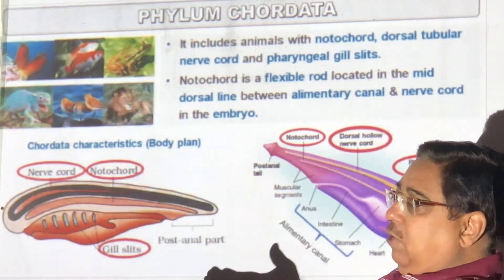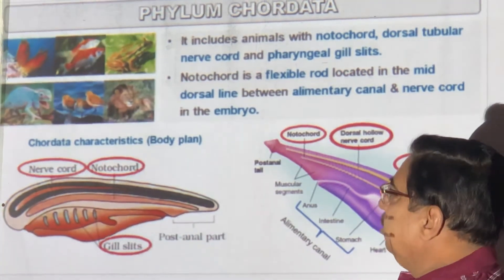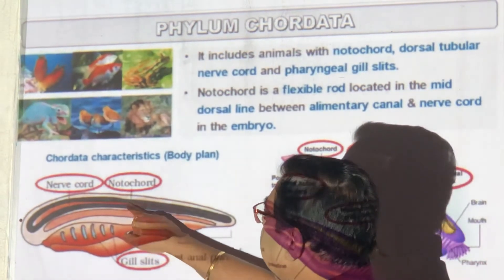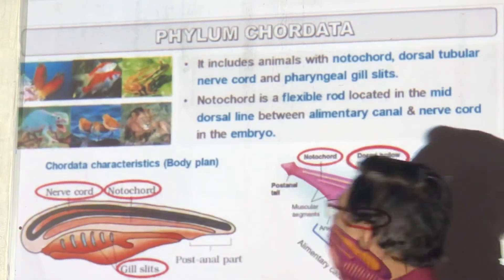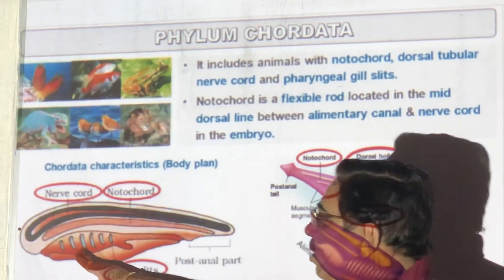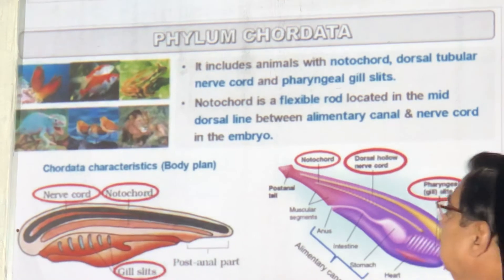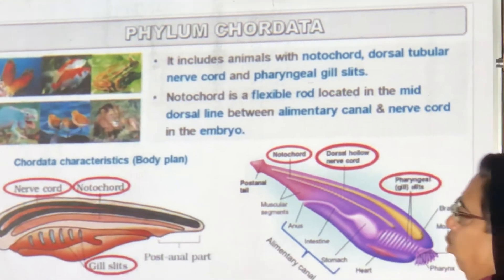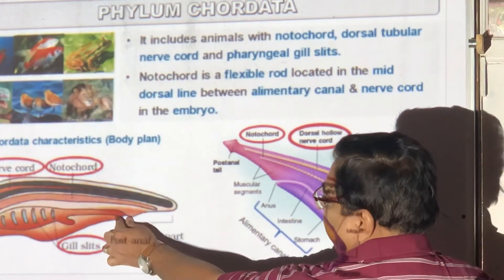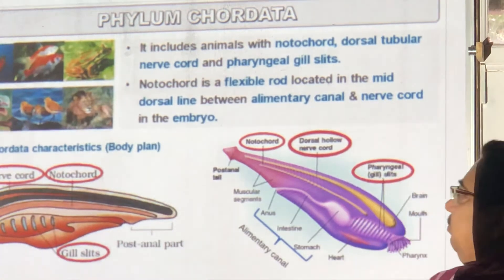Later, the notochord will develop into the vertebral column. So notochord, nerve chord, and alimentary canal are key features. Gill slits are also present. They show a post-anal tail — the anus comes before the end, not at the tip like in invertebrates.